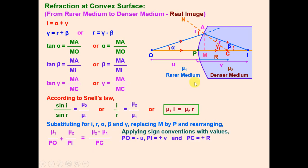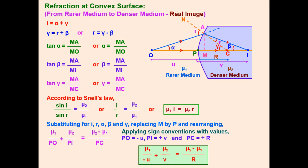Applying sign conventions: PO is measured against the incident ray, so it is negative (−u); PI is in the direction of the incident ray, so it is positive (+v); and R (= PC) is also in the direction of the incident ray, so it is positive. Substituting these values gives the final relation: mu 1/(−u) + mu 2/v = (mu 2 − mu 1)/R.